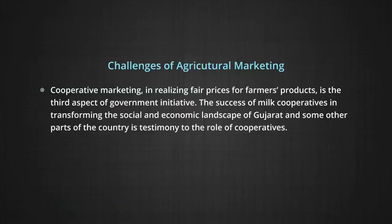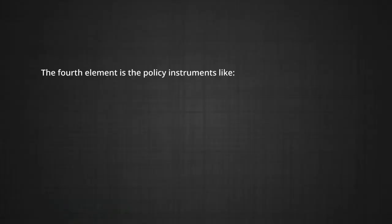Cooperative marketing in realizing fair prices for farmers' products is the third aspect of government initiative. The success of milk cooperatives in transforming the social and economic landscape of Gujarat and some other parts of the country is testimony to the role of cooperatives. However, cooperatives have received a setback during the recent past due to inadequate coverage of farmer members, lack of appropriate link between marketing and processing cooperatives, and inefficient financial management.